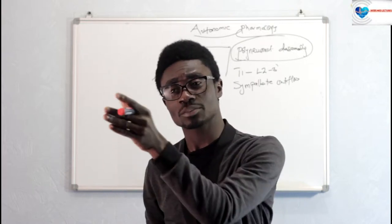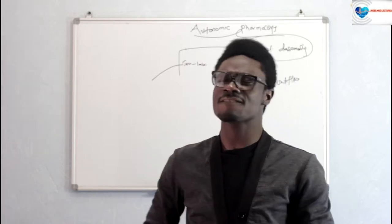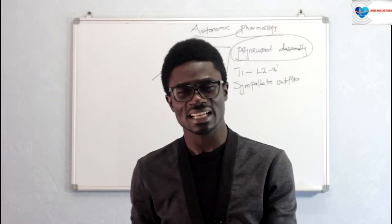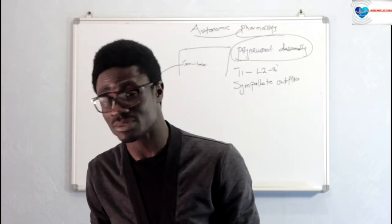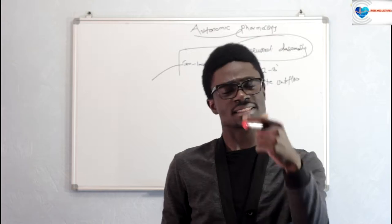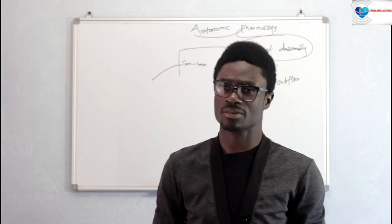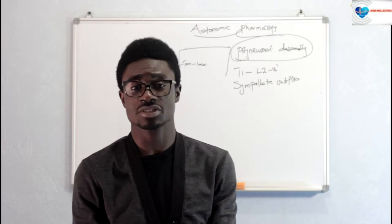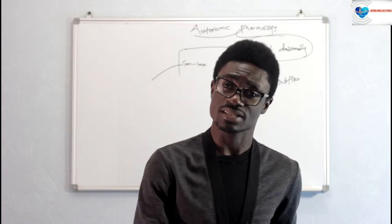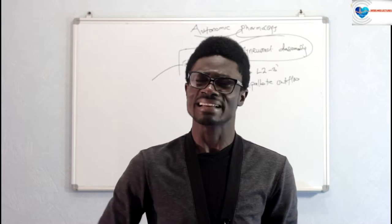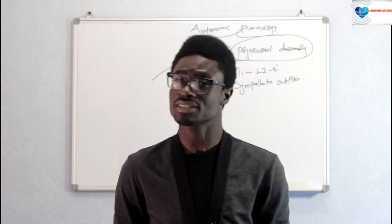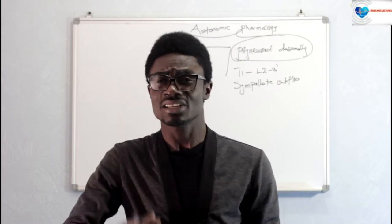When they stimulate the nicotinic receptor found in the sympathetic ganglion, the information is further relayed to the postganglionic sympathetic fibers. When this information is relayed to the postganglionic sympathetic fibers, at the terminal point of these postganglionic sympathetic fibers is where the main action takes place — that is the release of the neurotransmitter. When talking about the sympathetic nervous system, we're talking about norepinephrine.